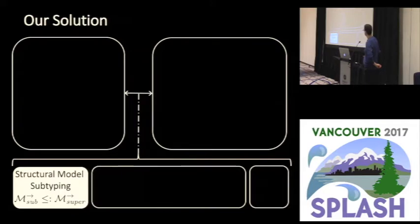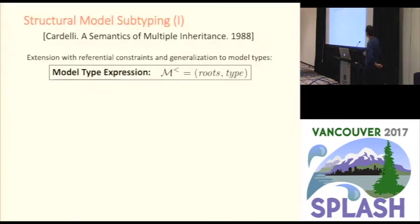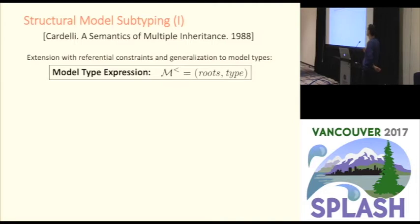Starting with structural model subtyping: Cardelli proposed a semantics of multiple inheritance and a subtyping relation that we have extended with referential constraints and generalized to the notion of model type. For us, a model type expression is a pair of a set of class names — the root classes of the metamodel — and a map type that maps each class name to a type expression.